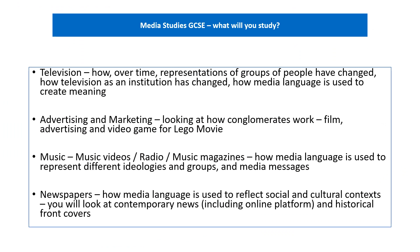GCSE Media covers the whole range of media forms: television, radio, film, gaming, magazines, news and the internet. We'll look at different media institutions, for example the BBC. We'll look at how media is funded — for example how newspapers are funded — and we'll look at how media has evolved over time, in particular when we look at television. Alongside this we will cover theory which allows us to develop understanding of the debates which currently surround media forms.